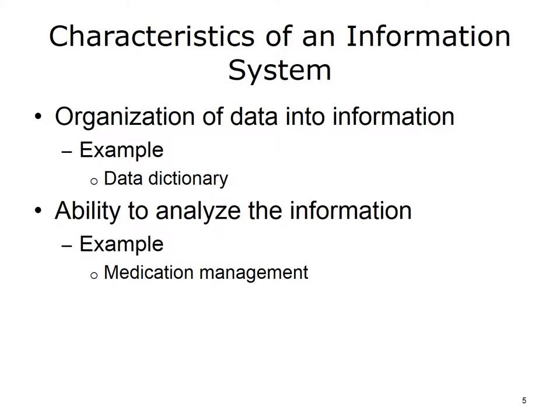Betts described two characteristics of an information system as the organization of data into information and the ability to analyze the information. He further stated, for data to be made meaningful, it must have a purpose. The purpose of the stored data should reflect the purpose and type of the information system. Data needs to be processed and organized before it becomes information. Organizing the data will most likely involve the processes of sorting and filtering, classifying, before it can be analyzed and stored for later retrieval.